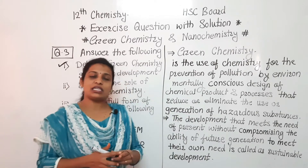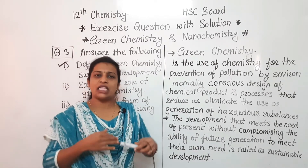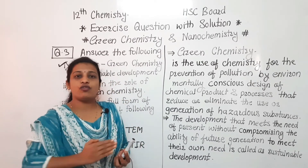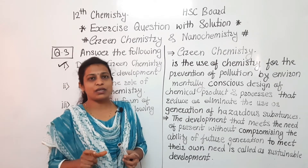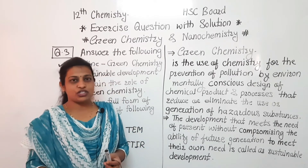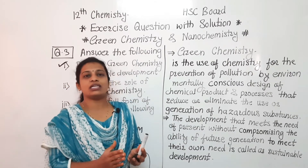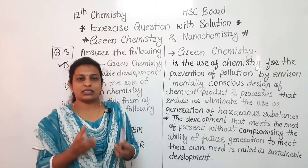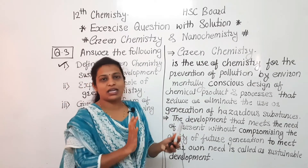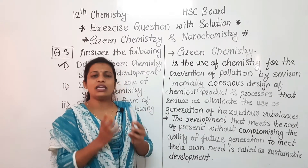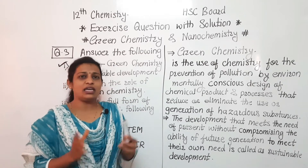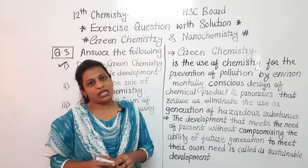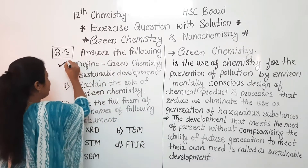For example, we use a lot of water — sometimes industry discharges waste water into rivers, polluting it so the next generation cannot use it. Similarly, rainwater flows into the sea and is lost. If we store and control water usage using proper methods, that is sustainable development. We have completed question number three's first part on green chemistry and sustainable development.